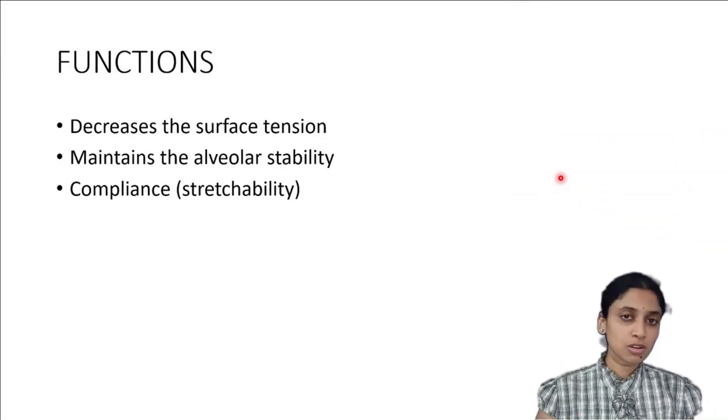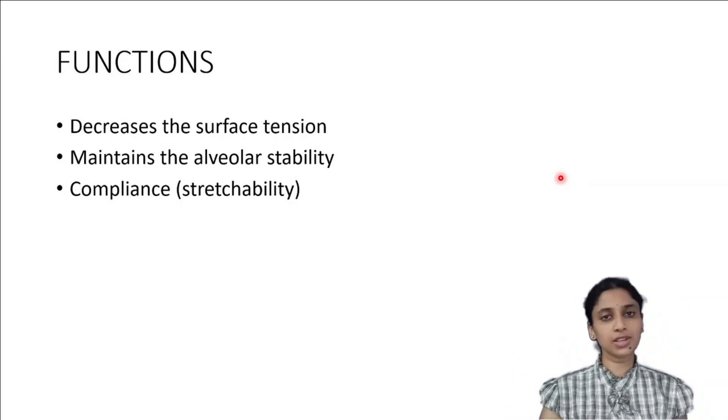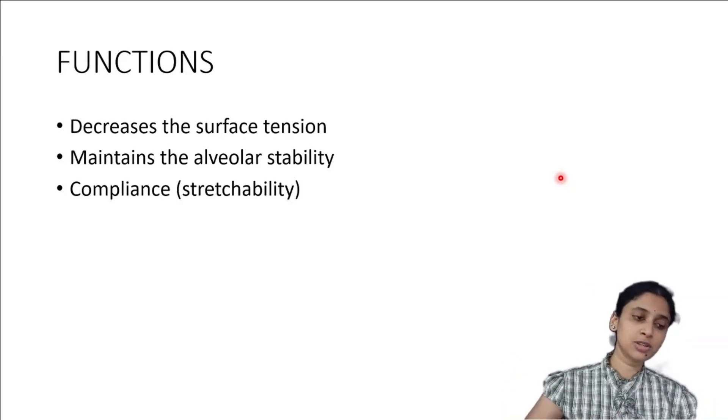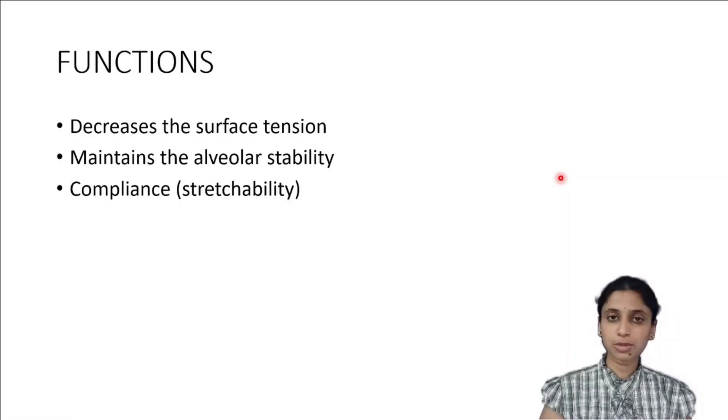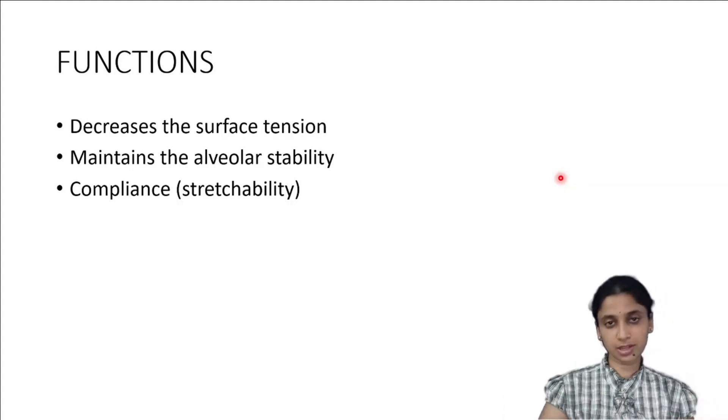So what is the function of surfactant? We know that surfactant decreases surface tension, and by decreasing the surface tension it maintains alveolar stability as well as compliance. Compliance is nothing but the stretchability of the lungs.